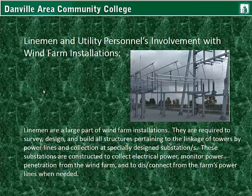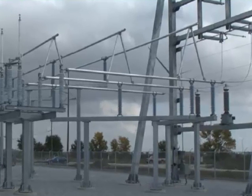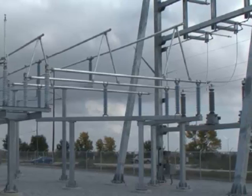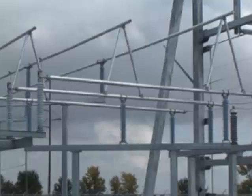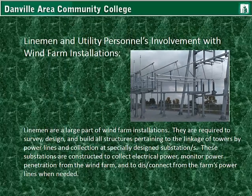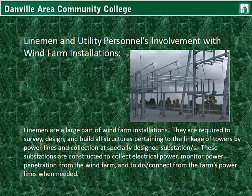Linemen are a large part of wind farm installations. They are required to survey, design, and build all structures pertaining to the linkage of towers by power lines and collection at specially designed substations. These substations are constructed to collect electrical power, monitor power penetration from the wind farm, and to connect or disconnect from the farm's power lines when necessary. They cut tubes, mount all insulators and stands, construct all structures on site, and install transformers. Wind power substations will be discussed in the next lecture.